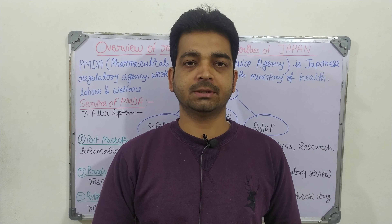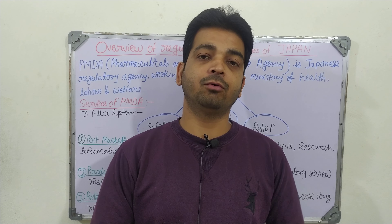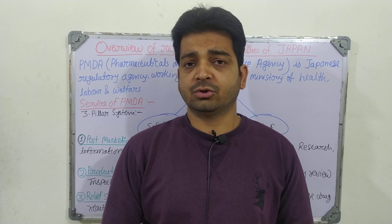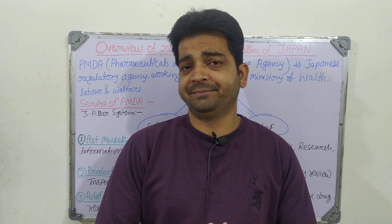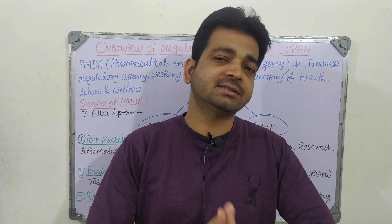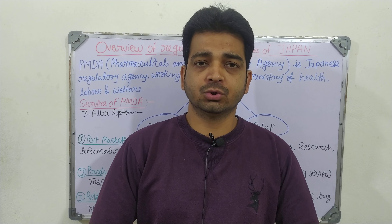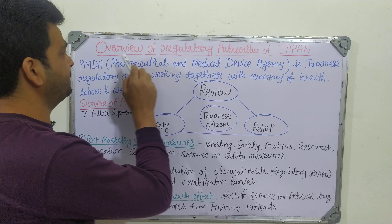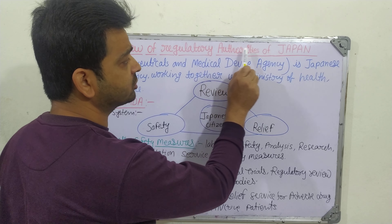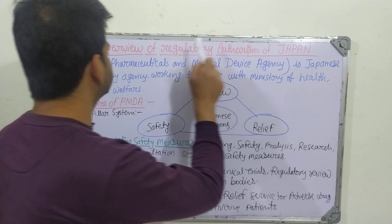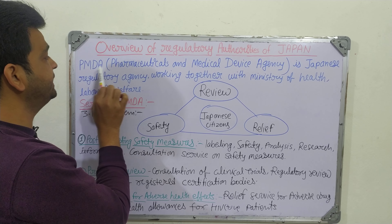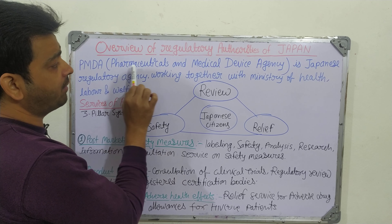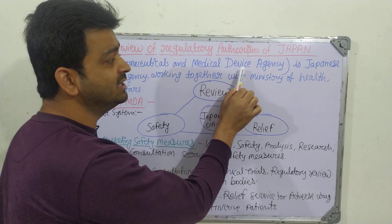Hello students. Now we are going to discuss about the overview of the regulatory authorities of Japan. Japan is one of the countries having a somewhat complex regulatory system. So let us try to simplify and understand. The topic is overview of regulatory authorities of Japan. Here, the specific body is PMDA — the Pharmaceuticals and Medical Device Agency.